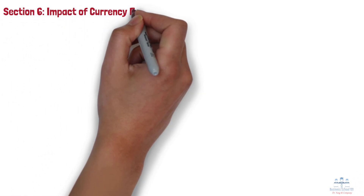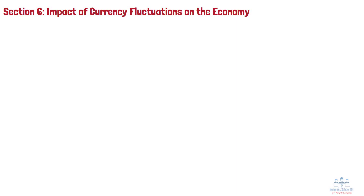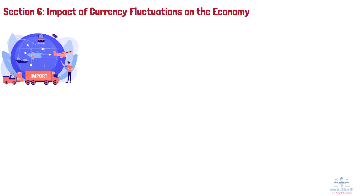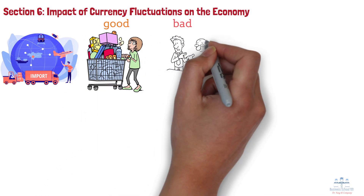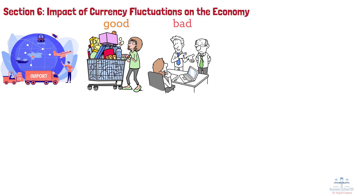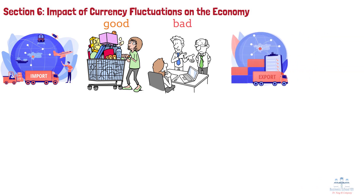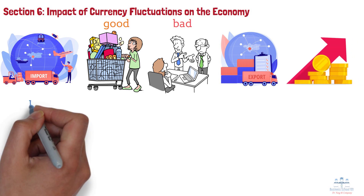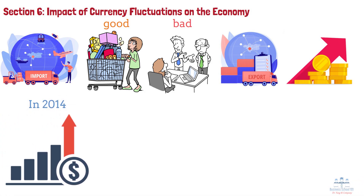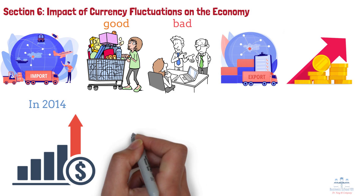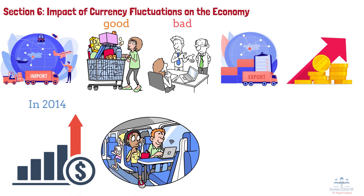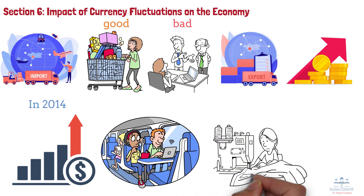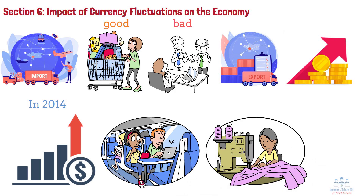Section 6: Impact of Currency Fluctuations on the Economy. Currency fluctuations can have far-reaching effects on economies. A stronger currency makes imports cheaper, which can be good for consumers but bad for exporters whose goods become more expensive for foreign buyers. Conversely, a weaker currency can boost exports by making them cheaper, but it can lead to higher prices for imported goods, potentially fueling inflation. For example, in 2014, the value of the US dollar strengthened considerably against many other currencies. This was great news for American tourists traveling abroad, as their dollars could buy more foreign currency. However, US exporters like manufacturers and farmers found it harder to compete globally because their goods became more expensive for foreign buyers.